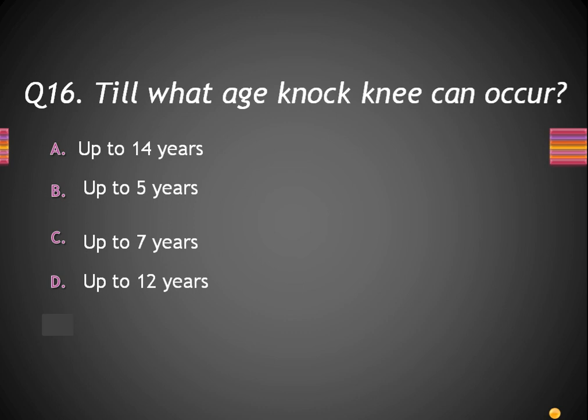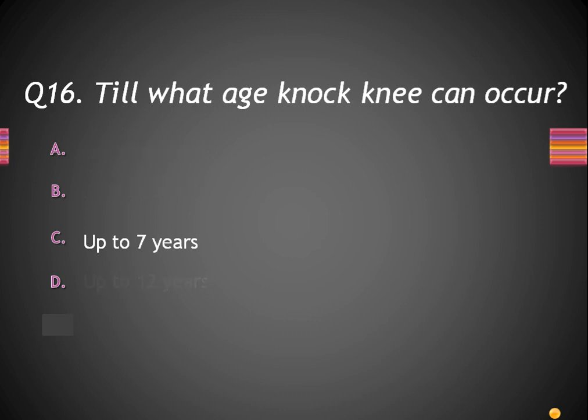Question 16: Till what age can knock knees occur? Option A, up to 14 years; B, up to 5 years; C, up to 7 years; and D, up to 12 years. The right answer is option C, up to 7 years. In early age, if a person gains more weight or parents force their child to walk too early — even at 6 or 7 months — that child can face a knock knees problem.